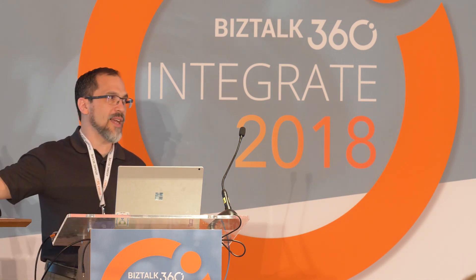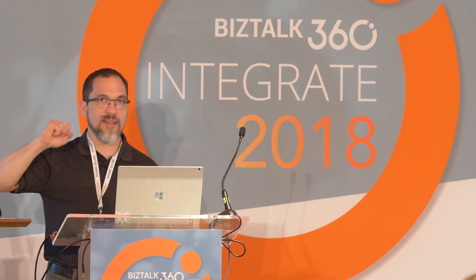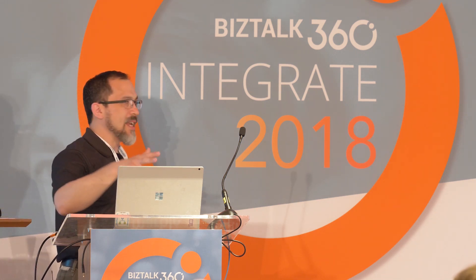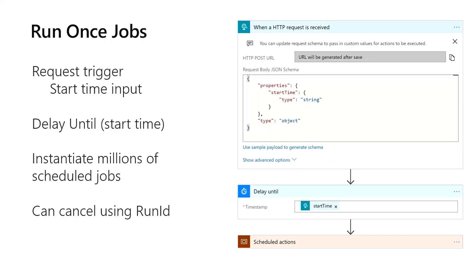You can have millions of these running — they are not definitions or resources, they are instances of a Logic App. You get a run ID, or you can use an XMS client tracking ID — your own tracking ID — to map to that item. You can then call back to delete it or check its status.